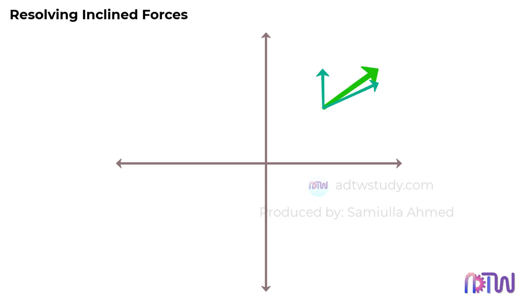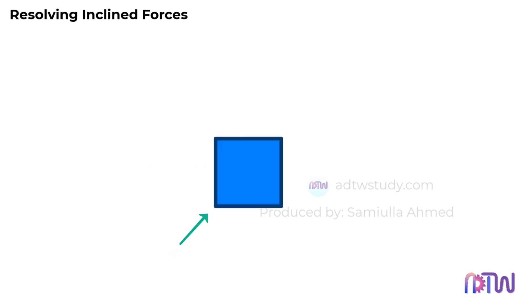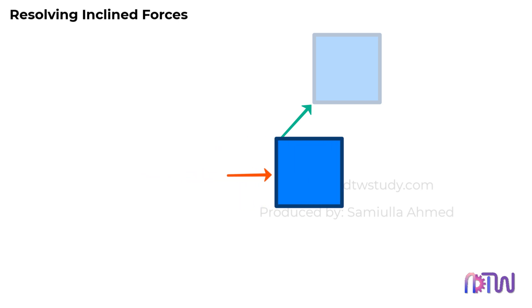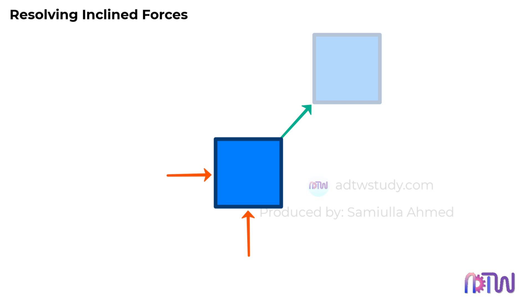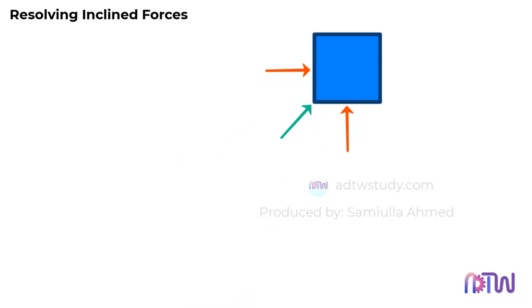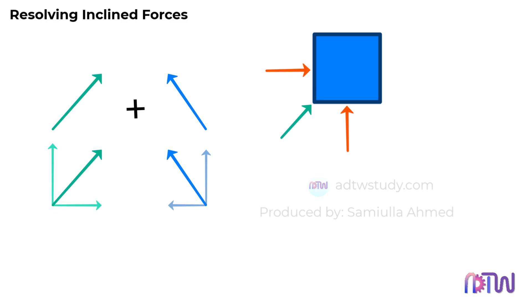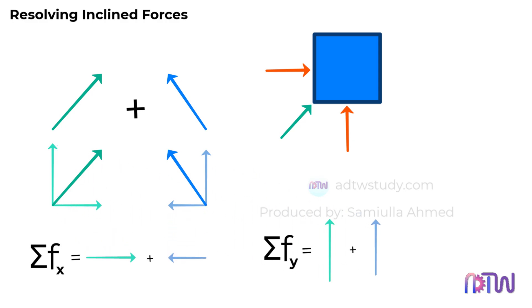Resolving a force means breaking it down into its vertical and horizontal components. For instance, if a 10 newton force acts at an angle, we find out how much of that 10 newtons acts vertically and how much acts horizontally. Imagine there is a square on this plane. If a force acts at a point on the square in a specific direction, it will cause the square to move in that direction. The same effect can be created with two forces — one acting from the left moving the square horizontally, and another acting from the bottom moving it vertically. Together, these two forces will cause the square to move in the same direction as the original single force. Therefore, whenever we want to add two different inclined forces, we first resolve them into their horizontal and vertical components. Once resolved, we can easily add the corresponding components together to find the resultant force.